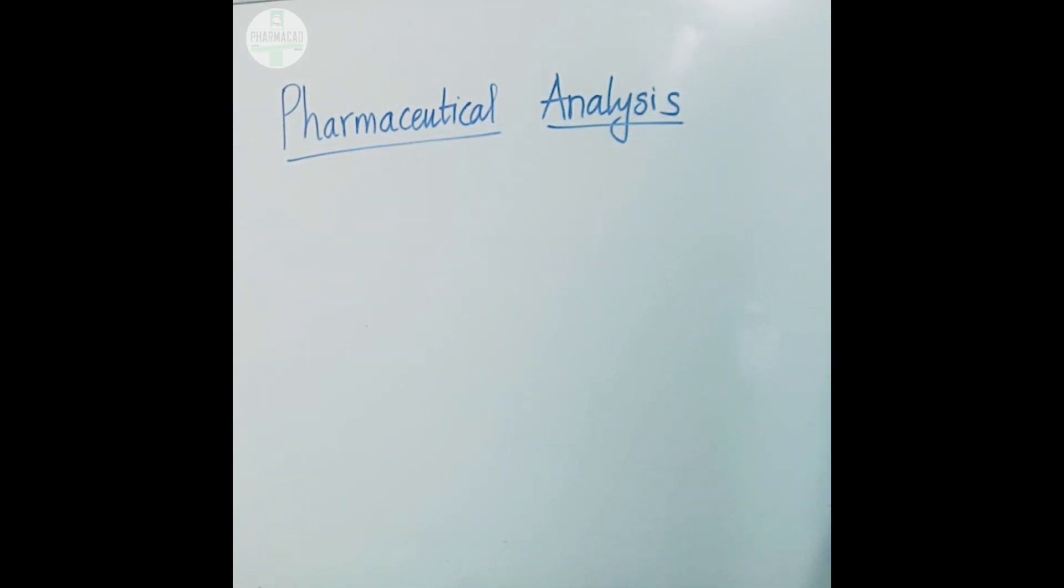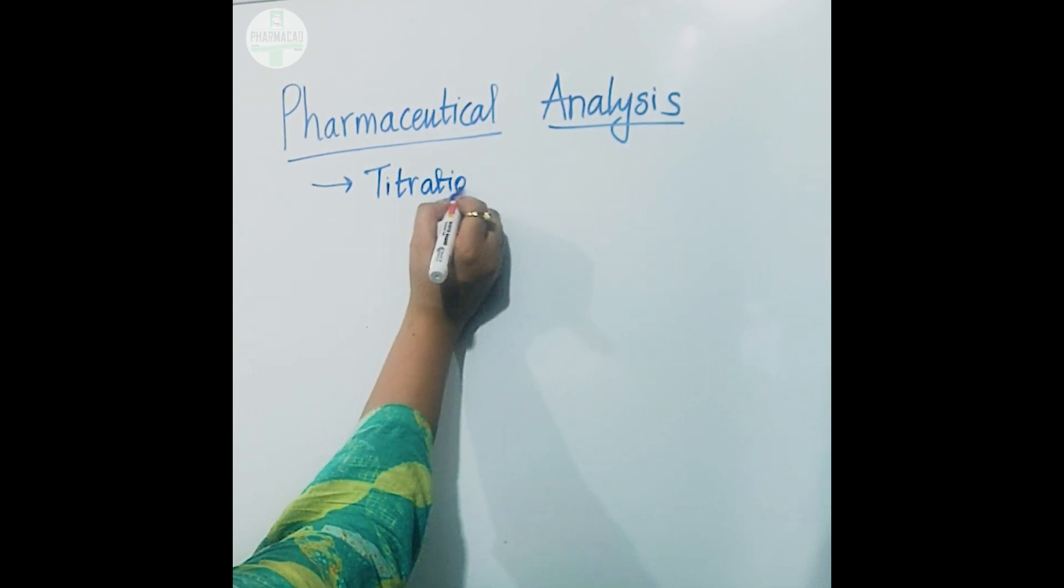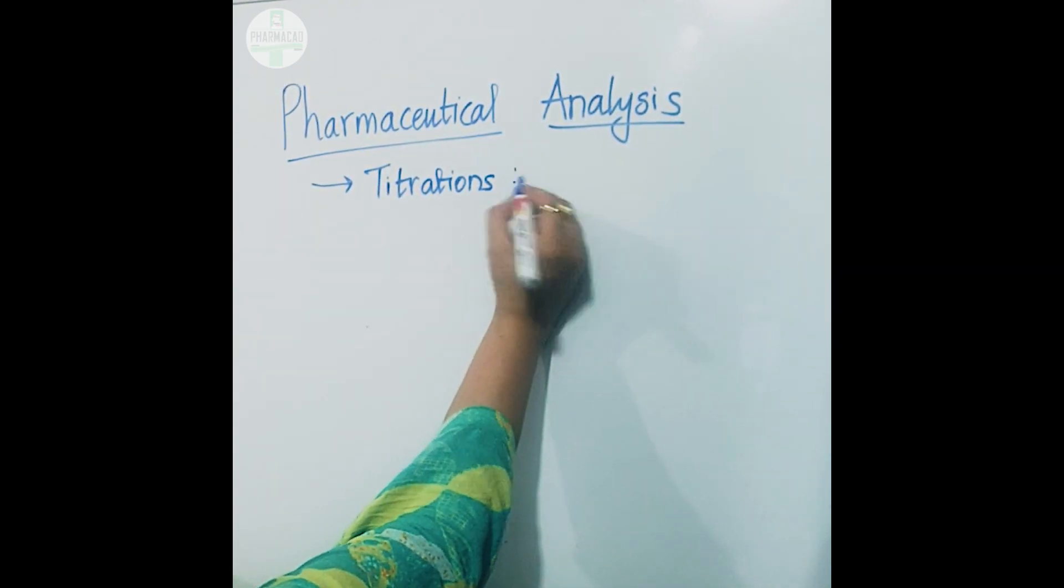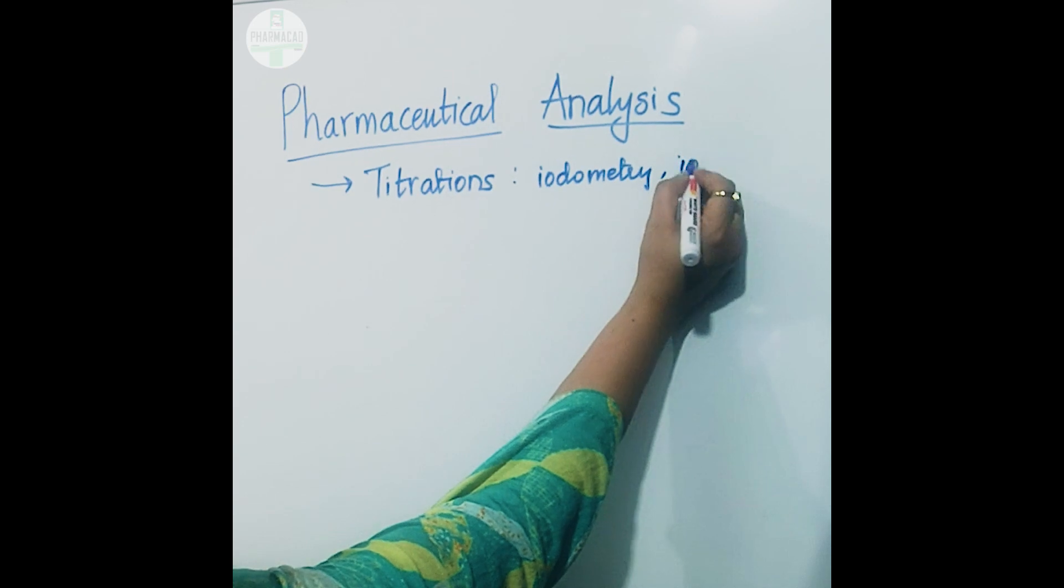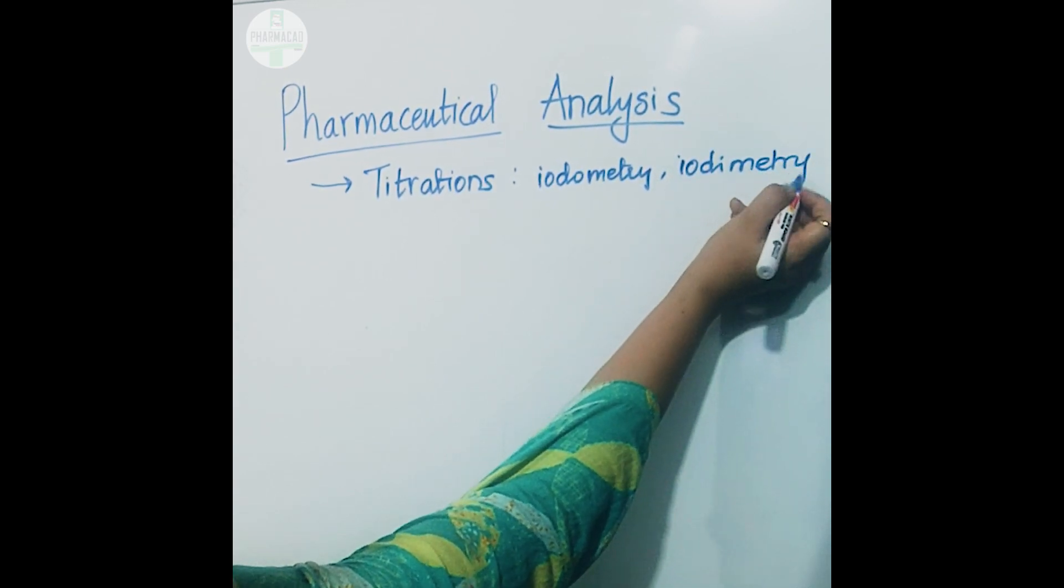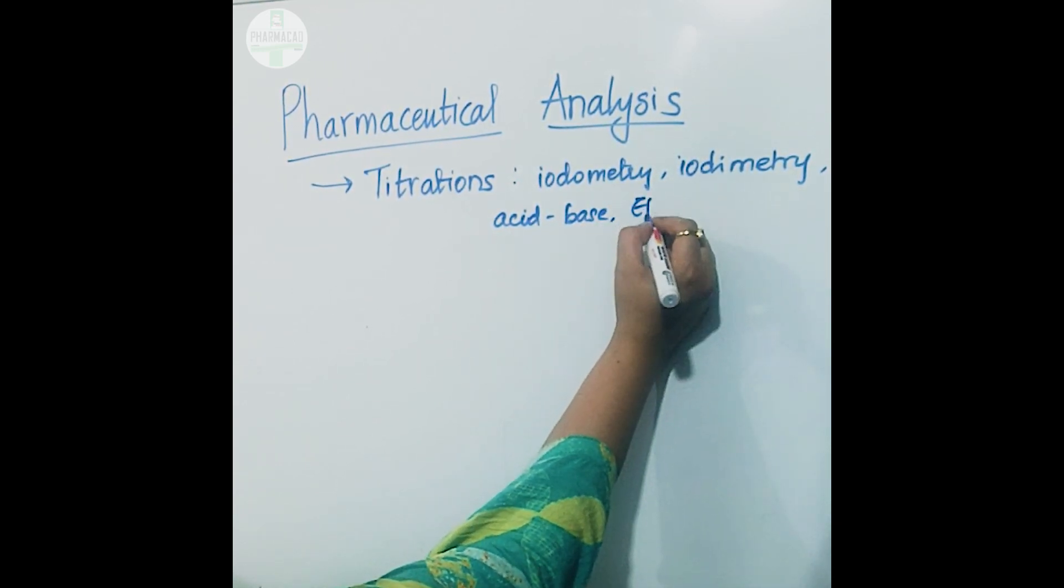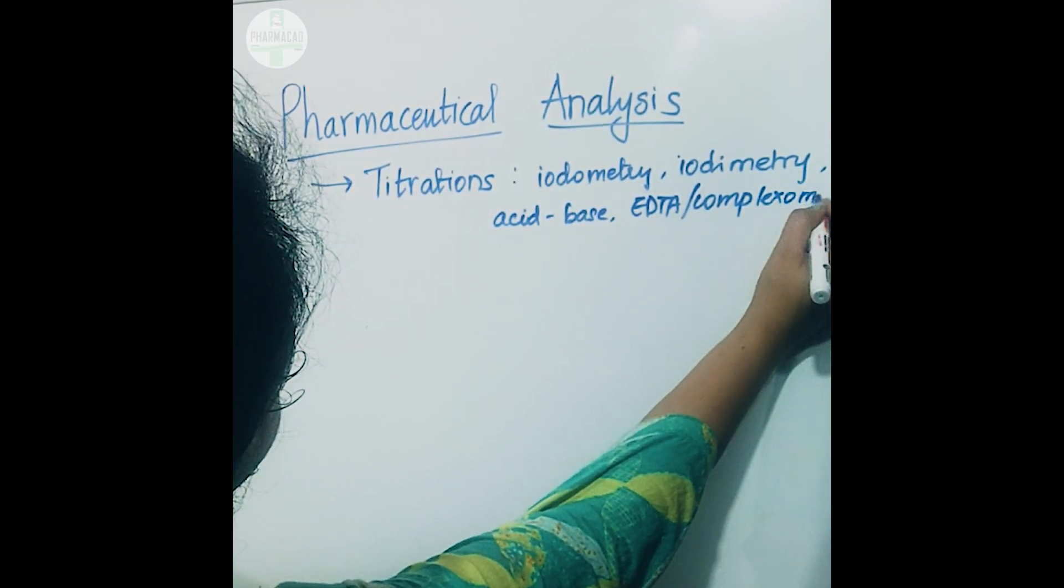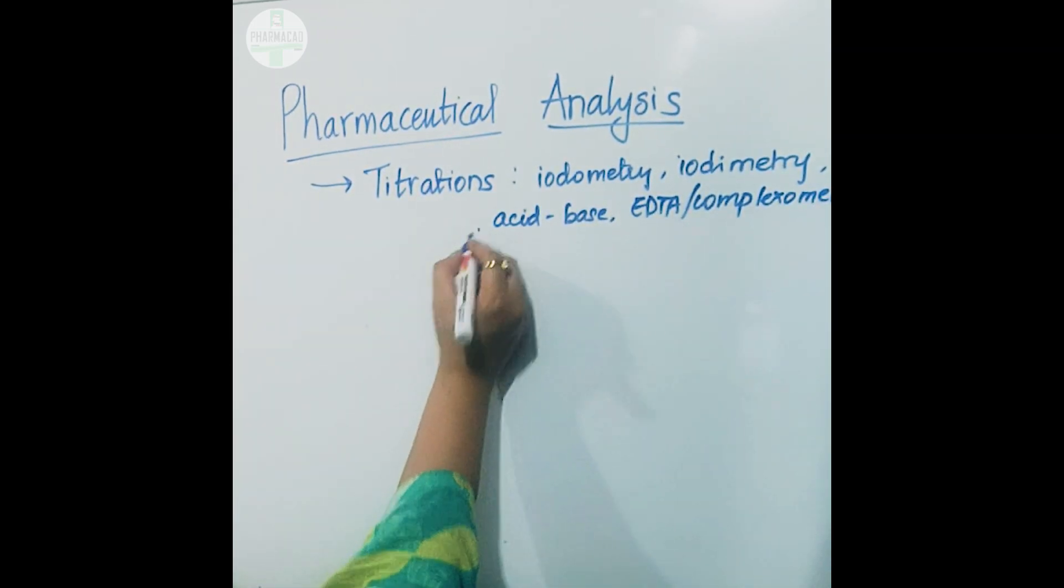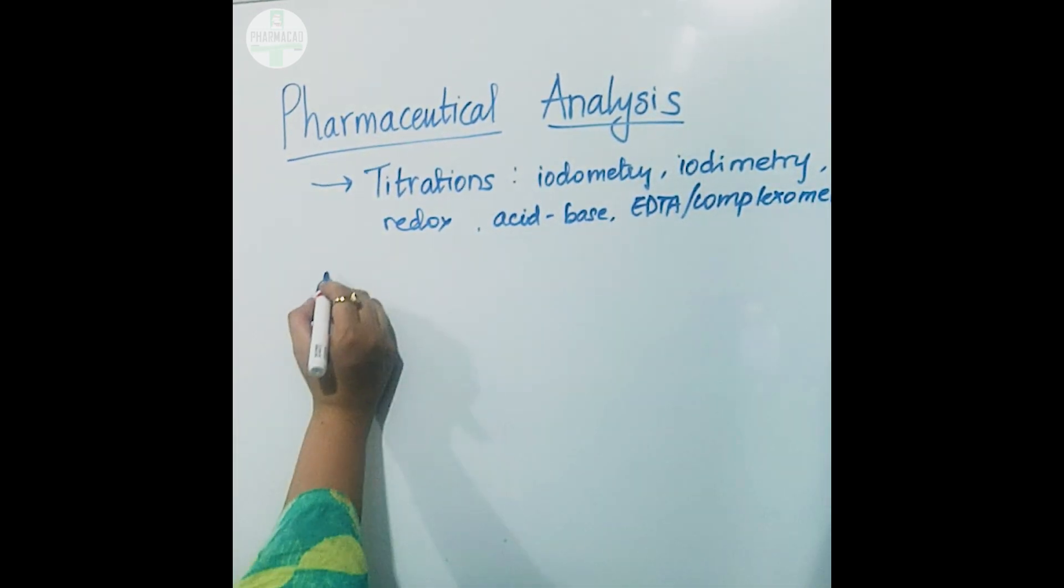Going further, which are the important analytical methods that we have studied till now? Examples include titrations, which we have been studying since 11th standard. Things like iodometry, iodometry, then acid-base, EDTA or complexometry, redox, etc. are common titrations which we have been studying since the beginning.